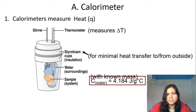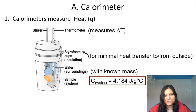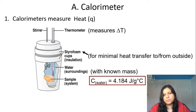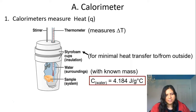We have water inside the calorimeter. The water acts as the surroundings to whatever sample we're looking at. Before we do anything with a calorimeter we have to make sure we know the mass of the water inside, because we're going to use that in a calculation. We also need to know the specific heat of water, which is 4.184 joules per gram degrees Celsius. We'll take a sample and either heat it to see the heat change it gives to the water, or we might have a sample that dissolves in water and gives its energy to the water in some way.